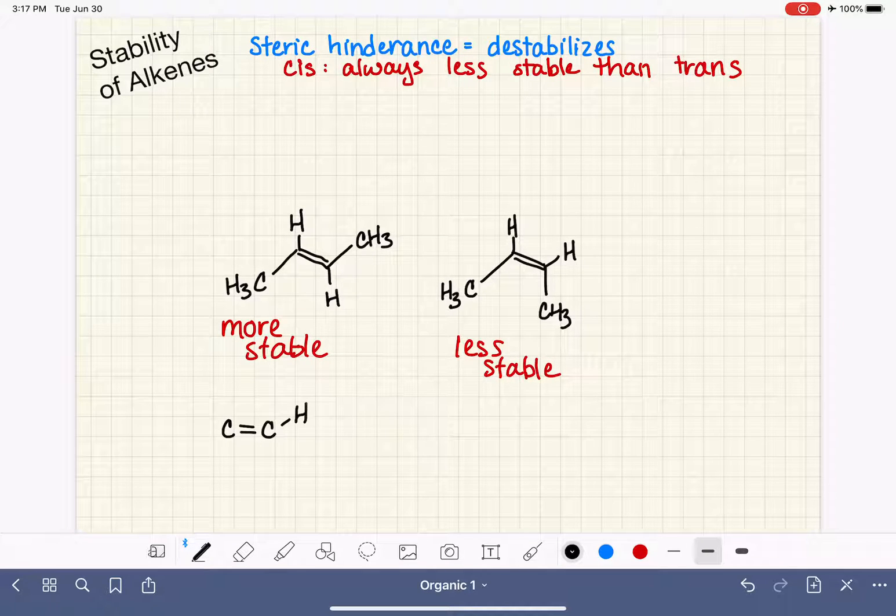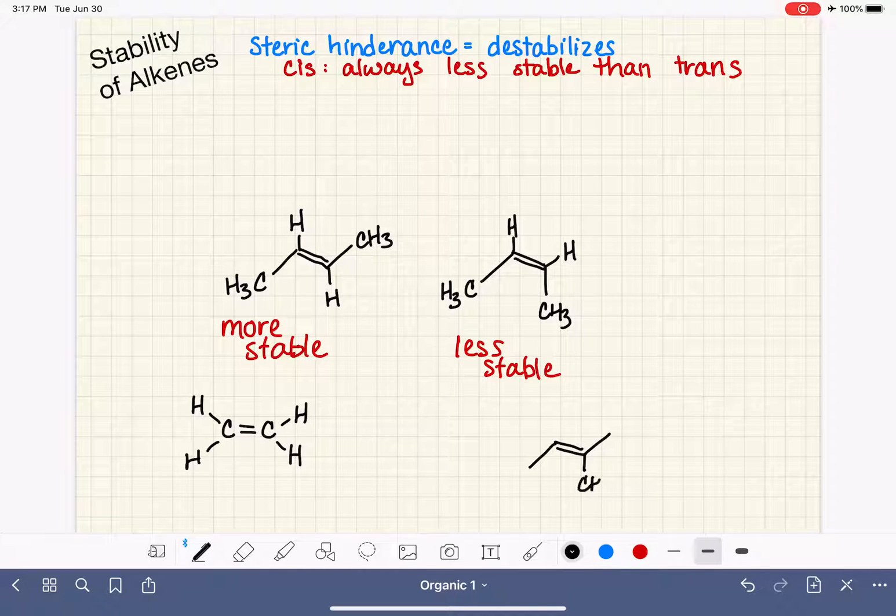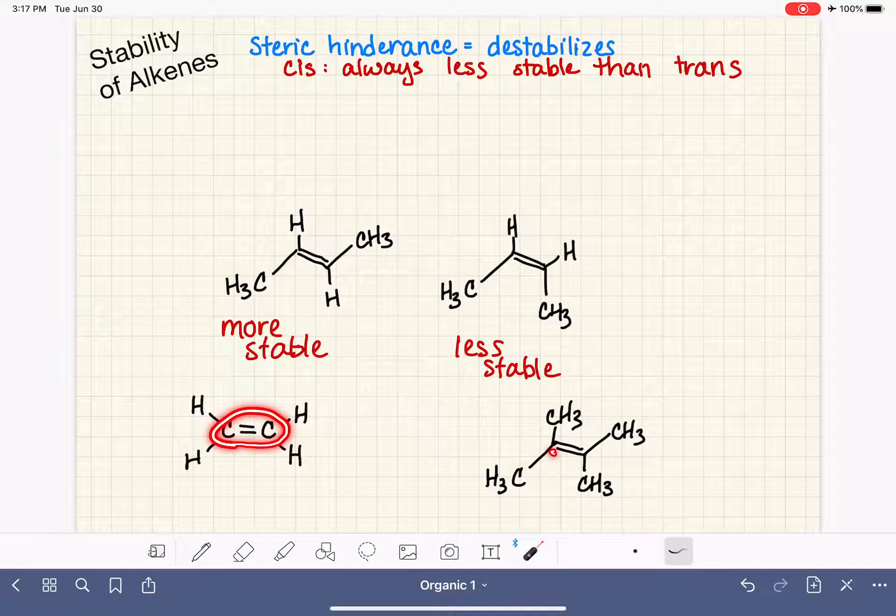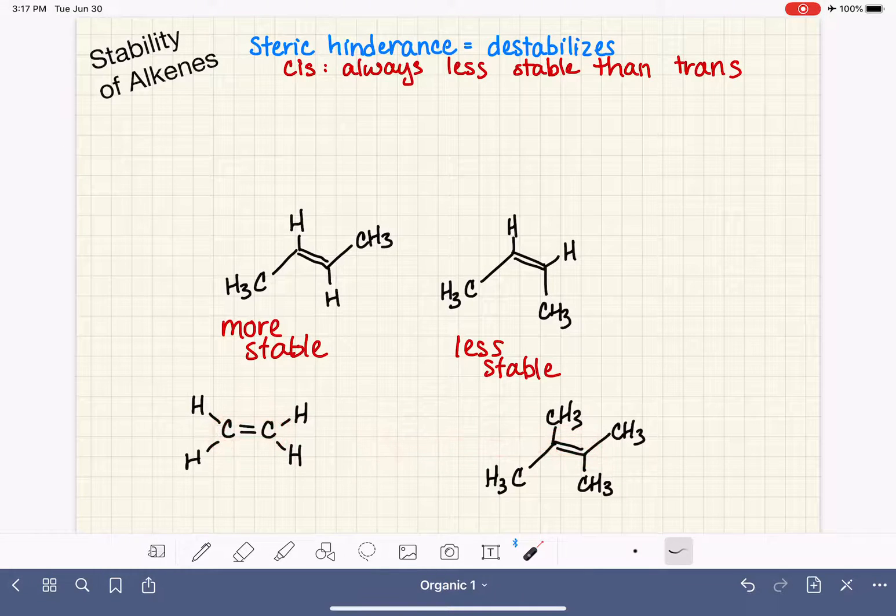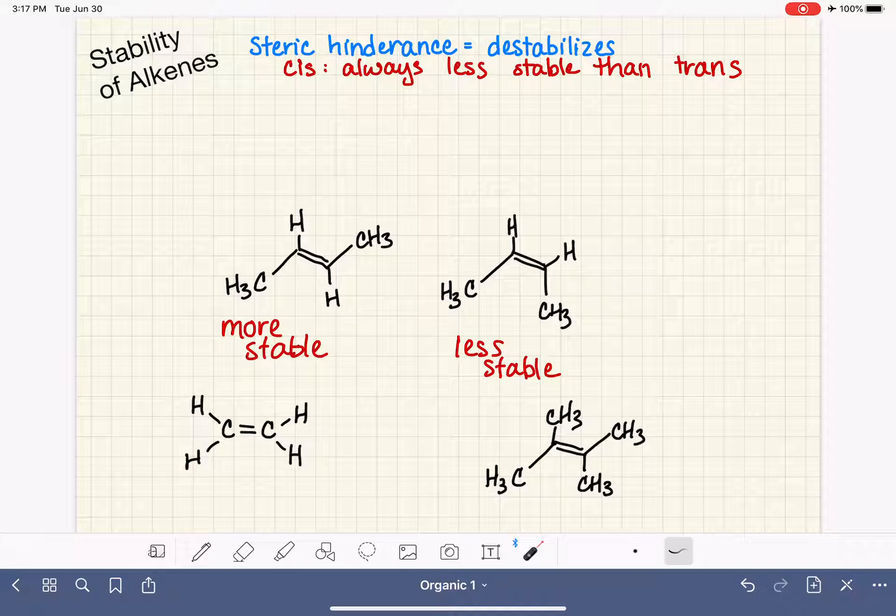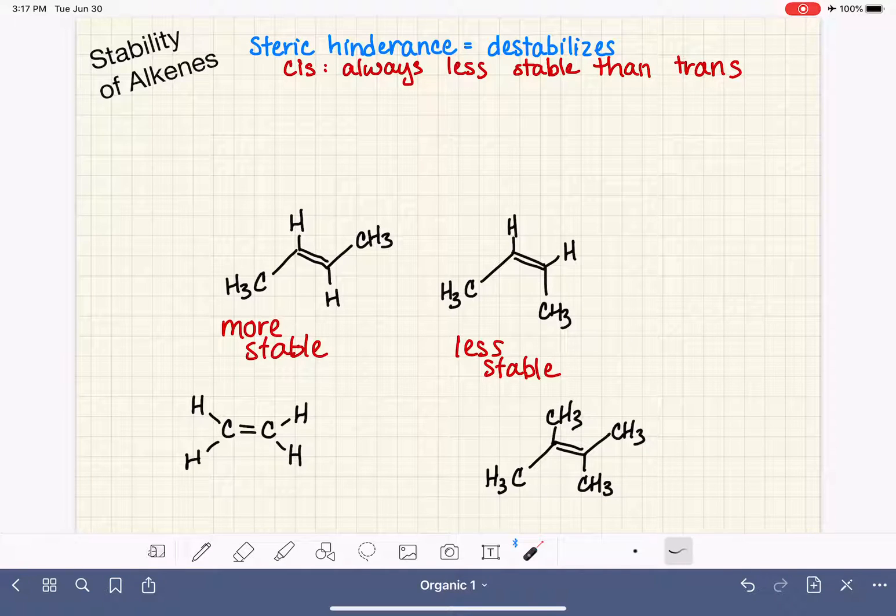Let's consider ethene, so this is just a two-carbon alkene, and also 2,3-dimethyl-2-butene. We have carbon-carbon double bond, and the difference between these two molecules is that ethene has only hydrogens on the carbon-carbon double bond, whereas our other molecule has all methyl groups, no hydrogens, on the carbon-carbon double bond.